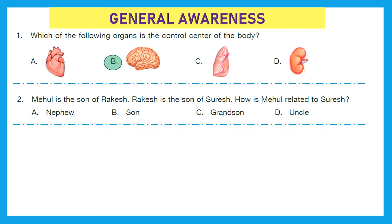Question 2: Mehul is the son of Rakesh, and Rakesh is the son of Suresh. So who is Suresh? Suresh is the father of Mehul's father — that means Suresh is the grandfather of Mehul. So Mehul would be the grandson of Suresh. Option C is the right answer.